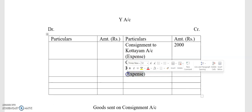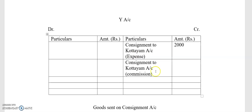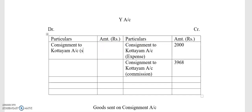Next is the commission amount of ₹3,968. Then we record the sales amount on the credit side of the consignment account, which is ₹49,600. The consignee account also records the advance given — that is cash. The bill receivable amount is ₹10,000.